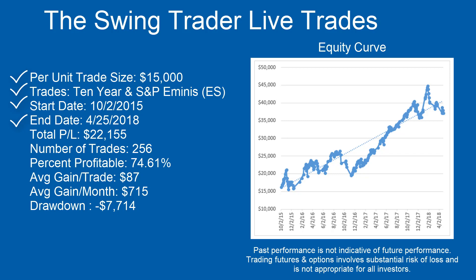The end date for this recording is the 25th of April 2018. Since then, the total profit we've seen has been $22,155 — again, on a $15K account. The total number of trades has been 256, and they've been 74% profitable. Our average gain per trade is about $87, which is really good, and the average gain per month is about $715, which tells you we do about nine trades per month roughly. Our biggest drawdown seen so far since trading live has been about $7,700.